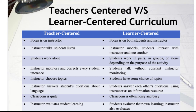Teacher-centered (TC) versus learner-centered (LC) curriculum: TC focuses on the instructor; LC focuses on both students and instructor. TC — instructor talks, students listen; LC — instructor models, students interact with instructor and one another. TC — students work alone; LC — students work in pairs, in groups, or alone depending on the purpose. TC — instructor monitors and corrects every student utterance; LC — students talk without constant instructor monitoring. TC — instructor chooses topics; LC — students have some choice of topics. TC — instructor answers students' questions about language; LC — students answer each other's questions using the instructor as an information resource. TC — classroom is quiet; LC — classroom is often noisy and busy. TC — instructor evaluates students' learning; LC — students evaluate their own learning, and the instructor also evaluates.